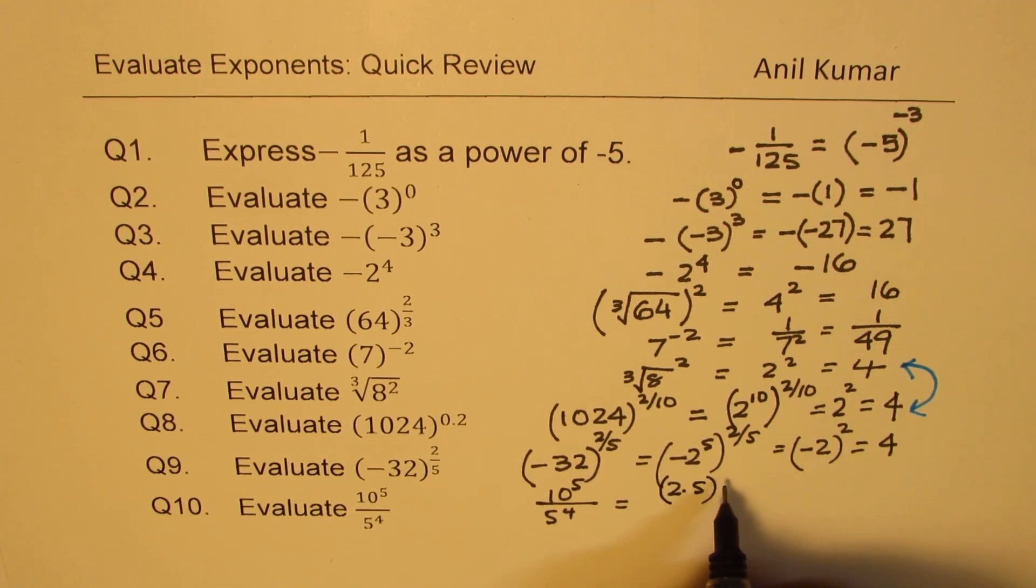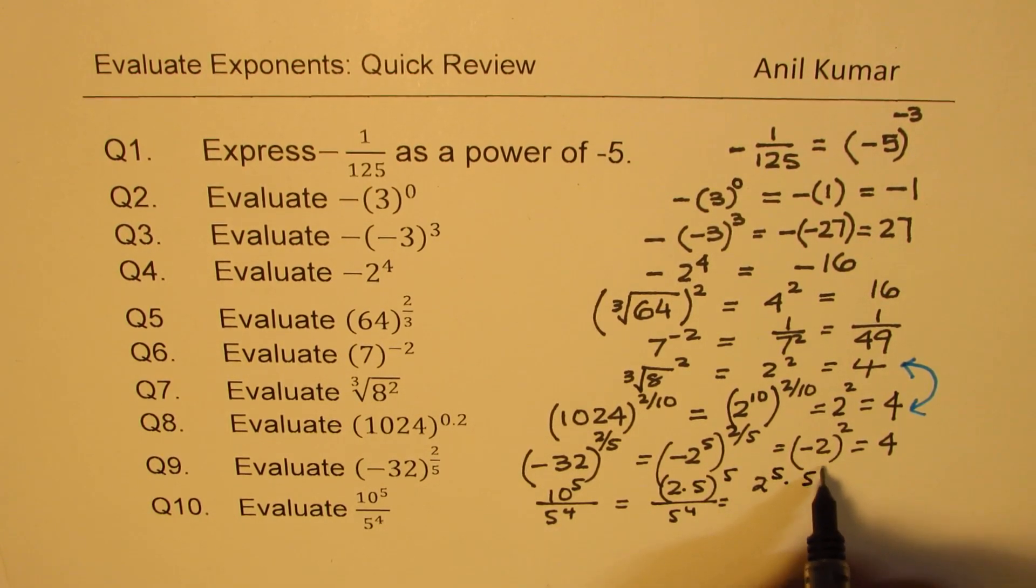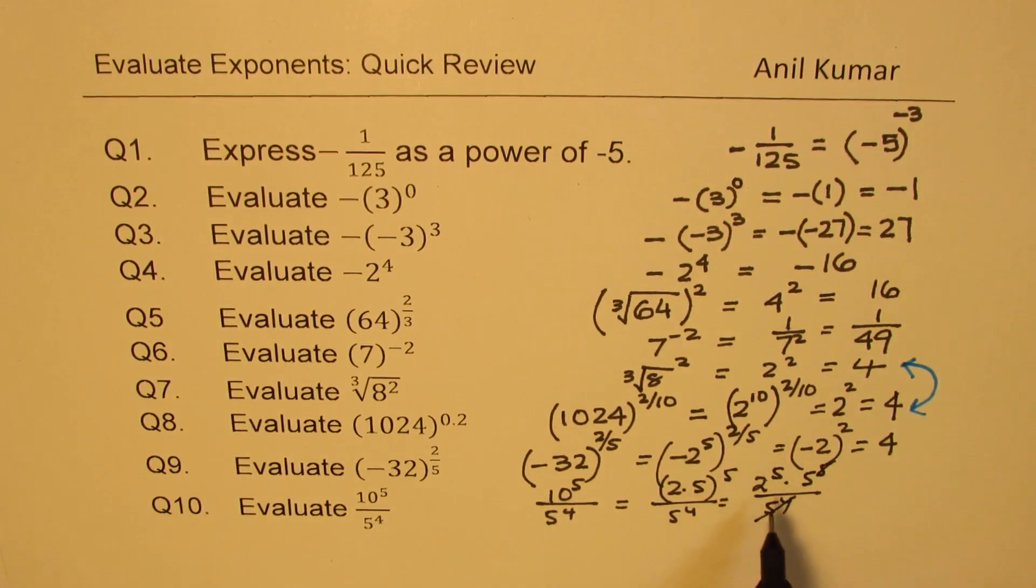So 2 times 5 to the power of 5 divided by 5 to the power of 4. That means 2 to the power of 5 times 5 to the power of 5 divided by 5 to the power of 4. Now these cancel. So we are left with 2 to the power of 5 times 5. Now 2 to the power of 5 is 32.